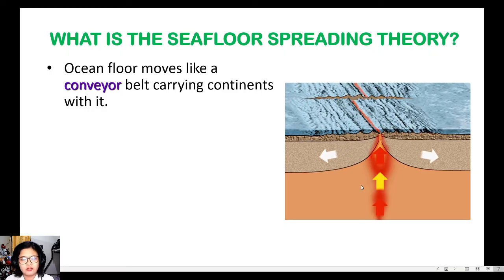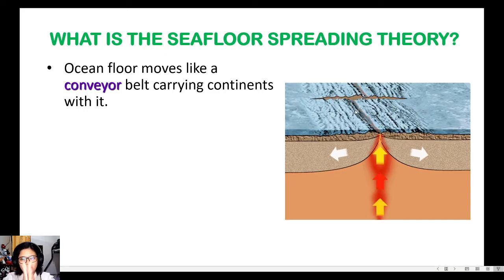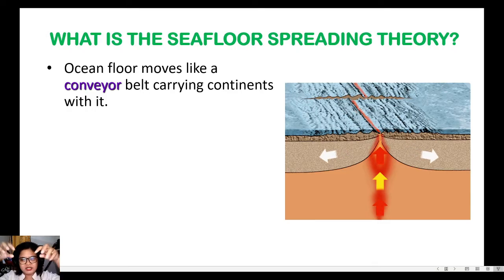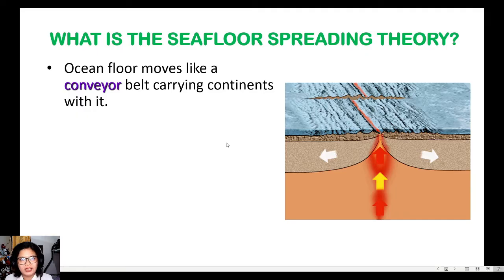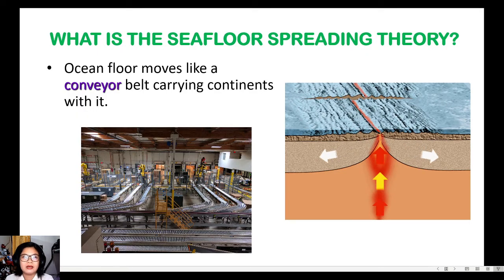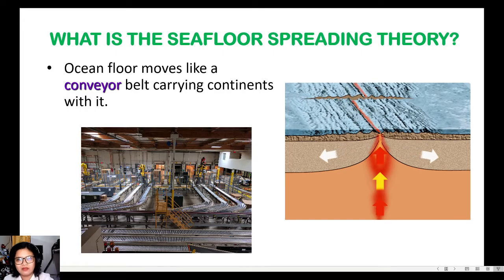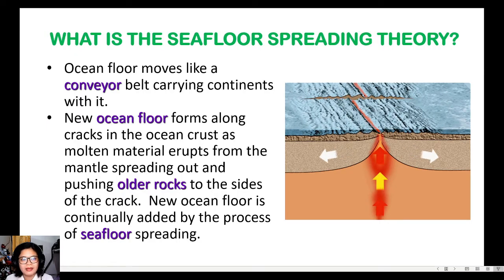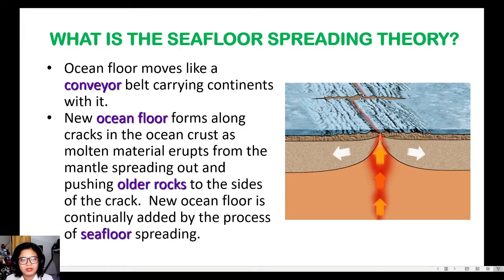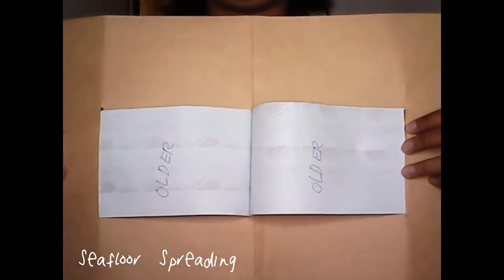As seen in the animation on screen, magma comes out of the mid-oceanic ridge and pushes the existing lithosphere outward on both sides, causing the continents to move — like a conveyor belt in a factory transporting goods from one place to another. New ocean floor forms along the cracks in the ocean crust as molten material erupts from the mantle, spreads out, and pushes all the rocks to the sides of the crack. New ocean floor is continually added through this process of seafloor spreading.